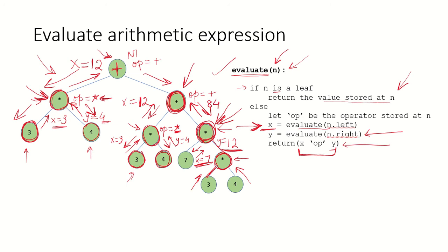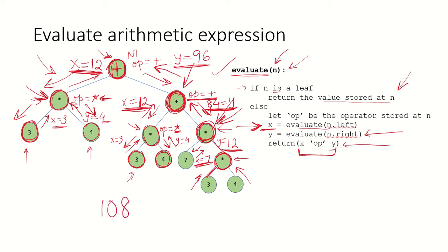84 is returned to the parent node and received in y. That node's left subtree had returned x=12 and its right subtree has returned y=84. The operation to be performed is addition, so 84 plus 12 gives 96, which is returned to node n1 in variable y. So y equals 96. Now at n1, x=12 and y=96 are added, giving the final answer of 108.